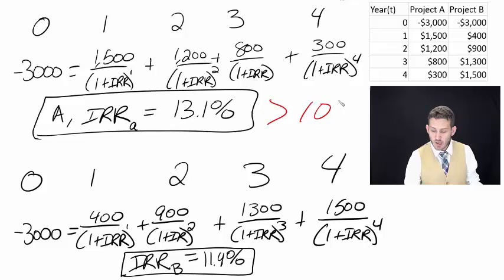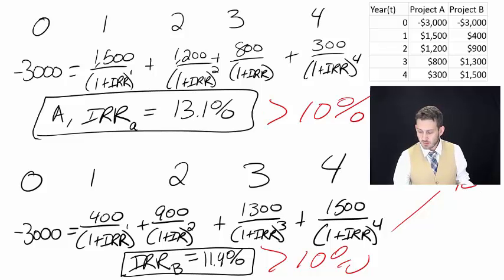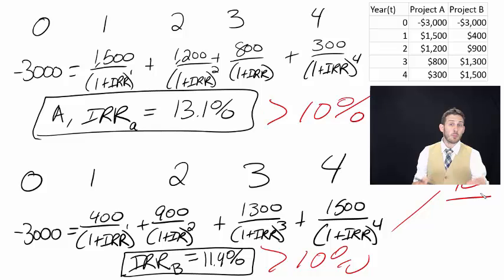If they're independent, we can do both of them, then yes, we're going to do Project A, because Project A has a return of 13.1%, and we require 10%. Project B has a return of 11.4%, we require 10%. Are we going to do it? Absolutely, right? We're going to do it because both of them have a return that is greater than 10%, so yes, we are going to do both projects.